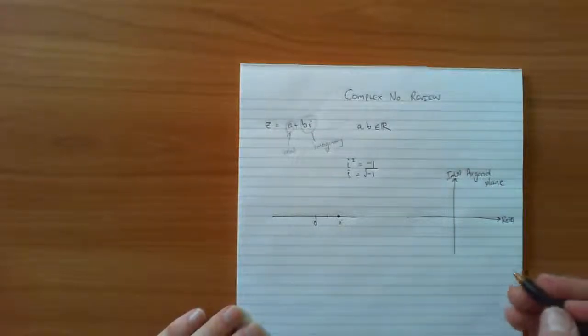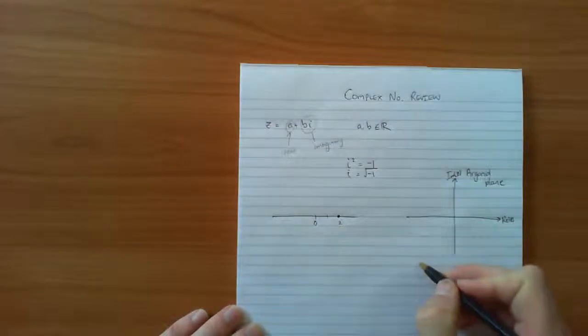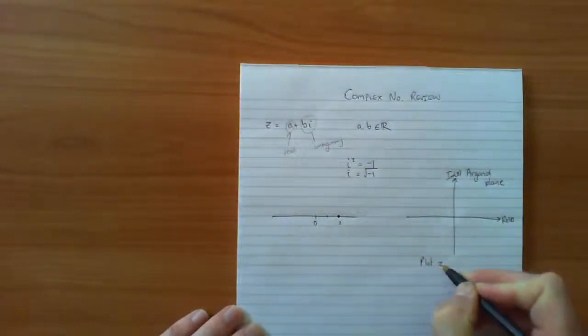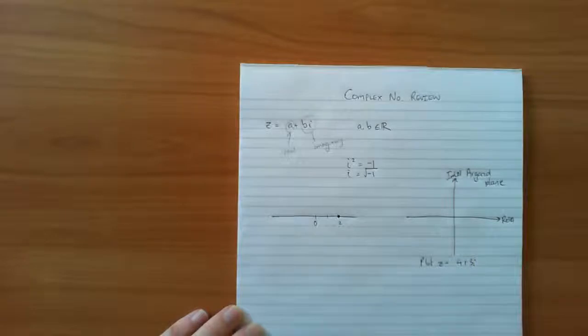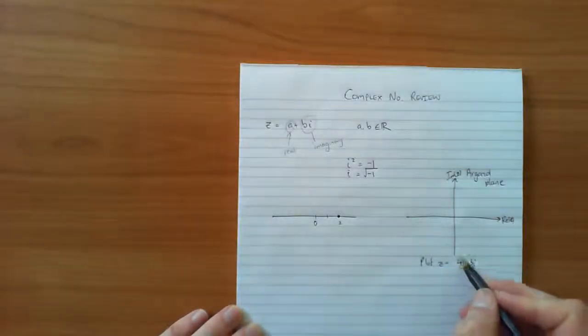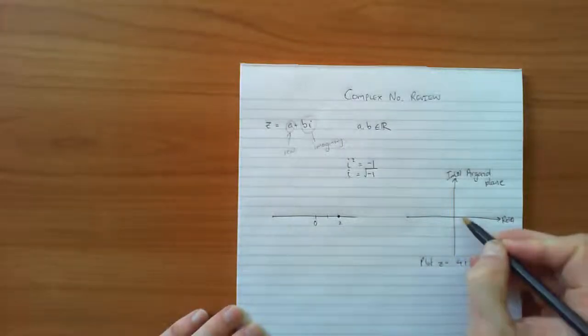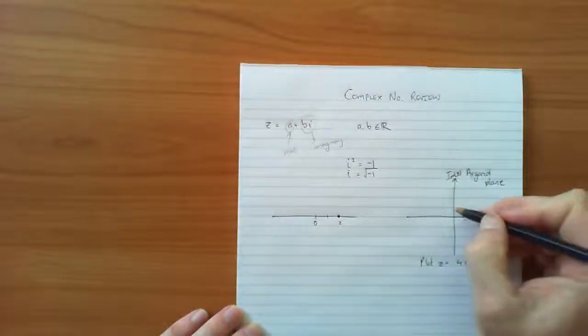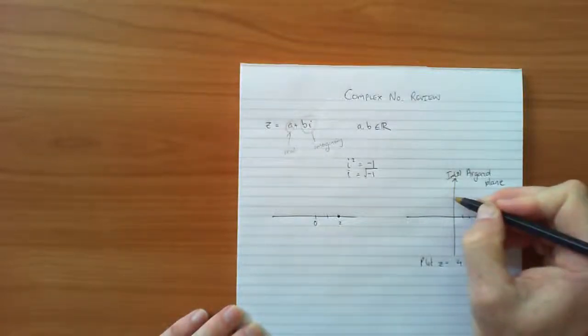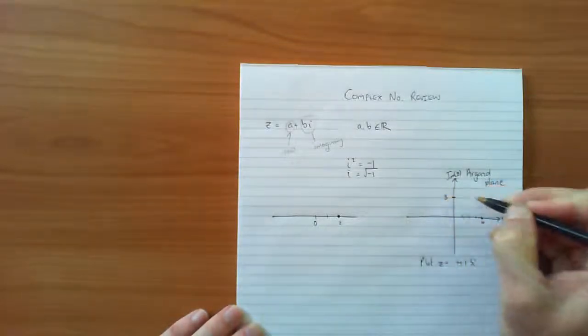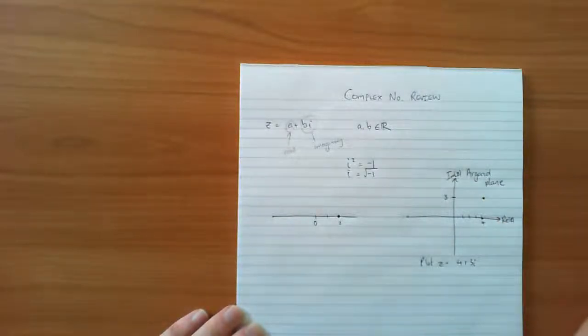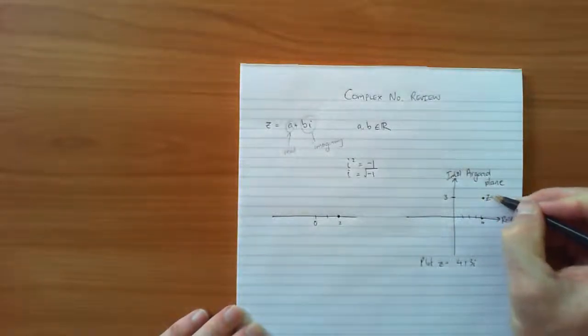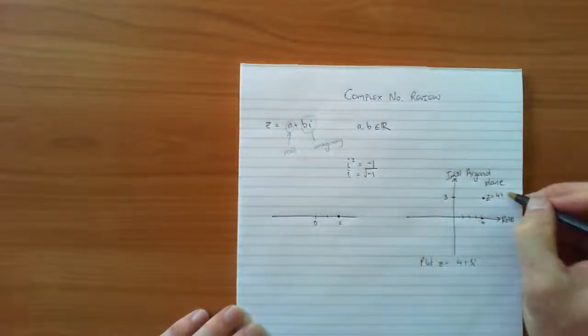Now if I was to give a specific example, if I was to plot Z equals 4 plus 3i, then in order to do that we would come 4 on the real axis, 4 is the real part, so 1, 2, 3, 4 come to 4 there, and we'd go up to 3. The scale doesn't really matter but this might be 3, and so there would be the point Z equals 4 plus 3i.